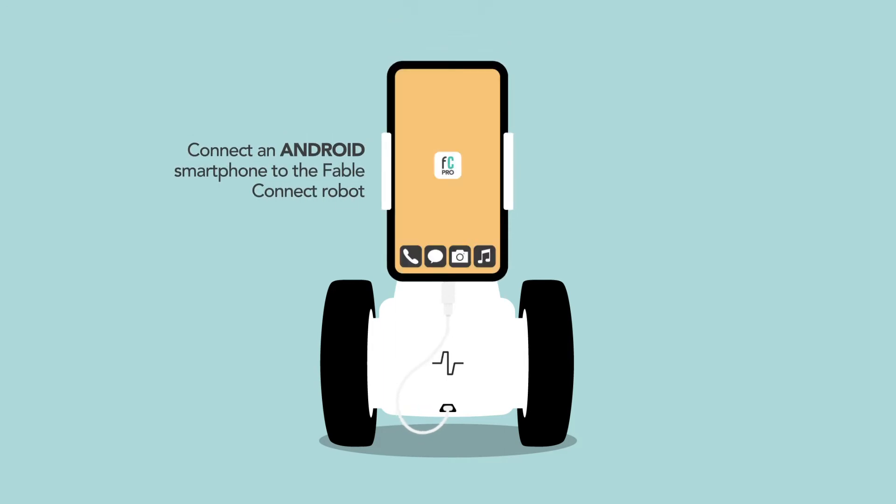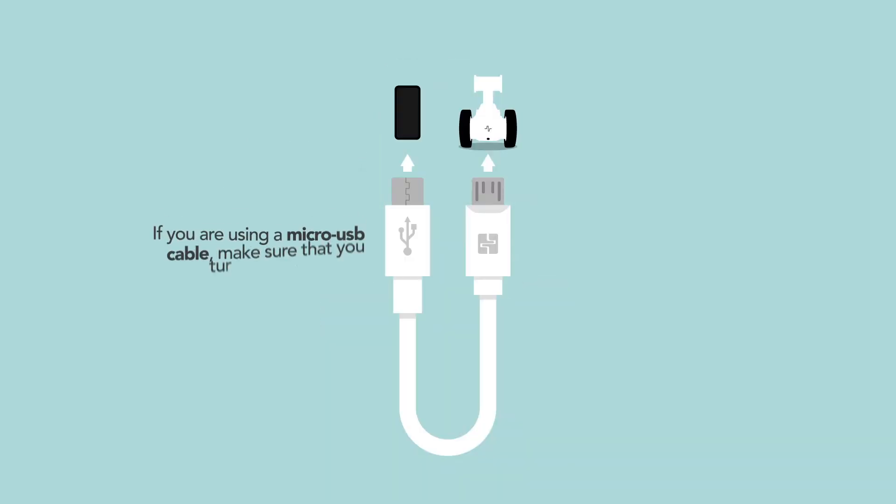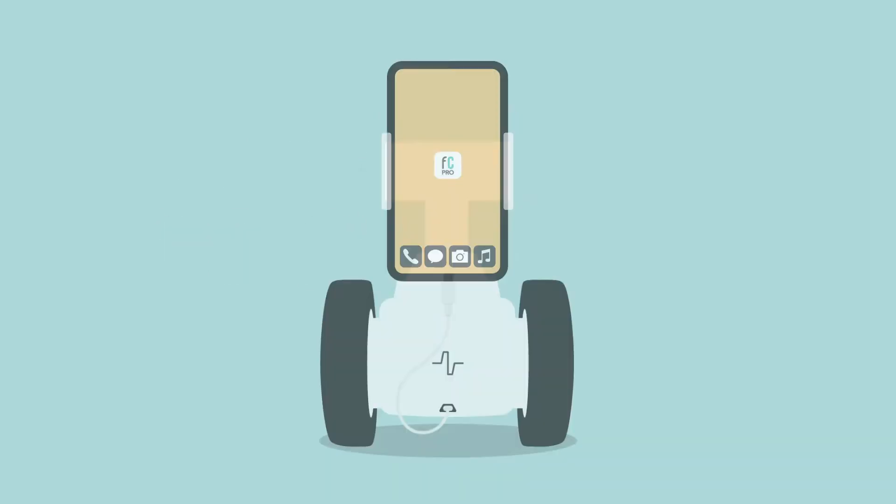If you are using a micro-USB cable, make sure that you turn it the right way. The plug with the Shape Robotics logo has to go into the robot.